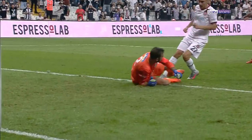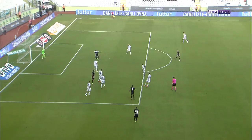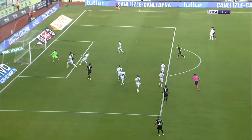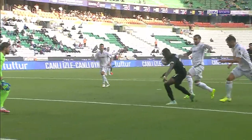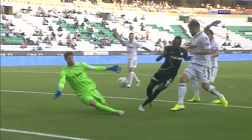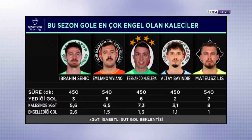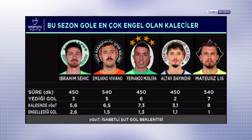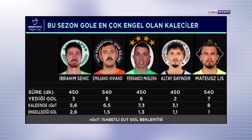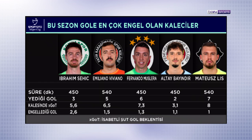Bu sezonun sıralı listesinde gol engelleme açısından birinciliği elinde tutan İttifak Holding Konyaspor kalecisi İbrahim Şehiç, engelleme oranında da lider. Farkta 4. olan Altay Bayındır oranda 2., farkta 2. olan Emiliano Viviano ise oranda 3. Ancak sezonun ilerleyen aşamalarında daha az forma giyen kalecilerin oran sıralamasını değiştirmesini bekliyoruz.